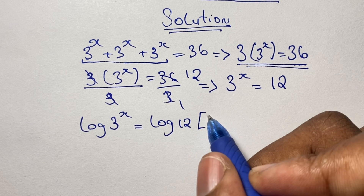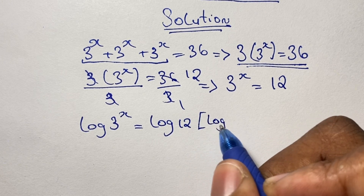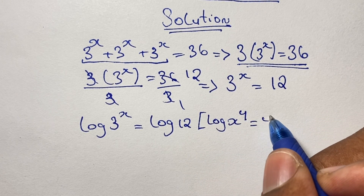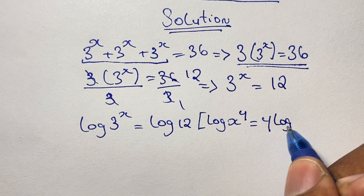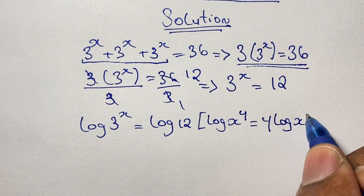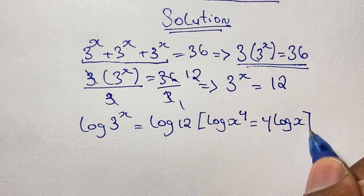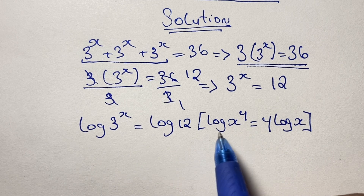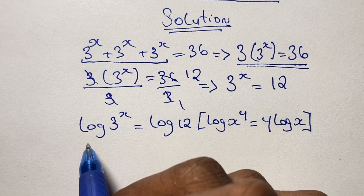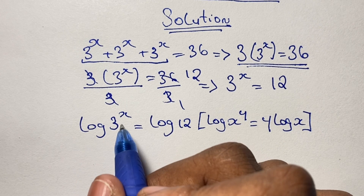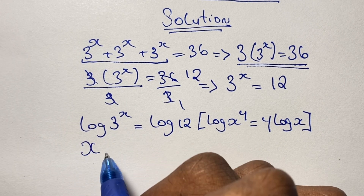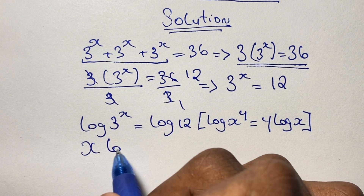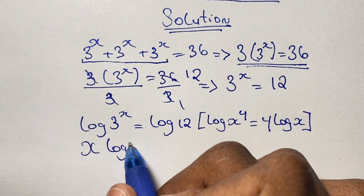To simplify this equation and solve for x, we use this logarithm rule where we say that log of x to the power y is equal to y times the log of x. Using our rule, that gives us x times log 3 is equal to log 12.